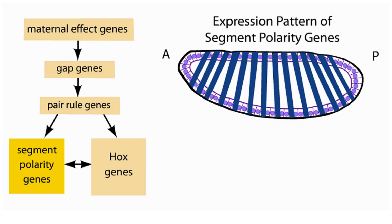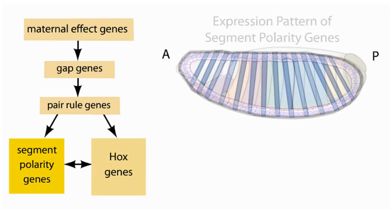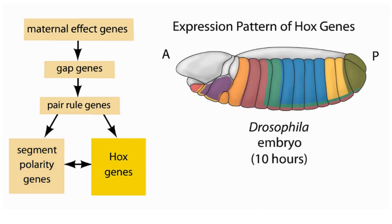The segment-polarity genes are the last set of segmentation genes to turn on in the Drosophila embryo. They become activated in a complex striped pattern that foreshadows the segmented body plan of an adult. By the end of this cascade, nuclei throughout the embryo know which segment they will be part of in the adult fly. The next set of genes in the cascade, the Hox genes, determines the form and function of each segment.